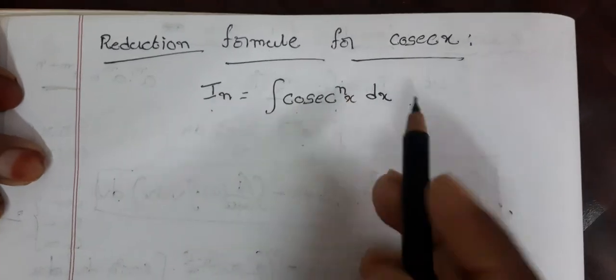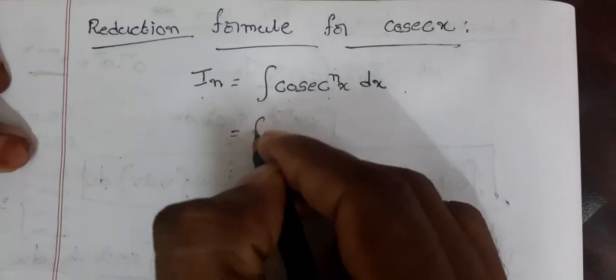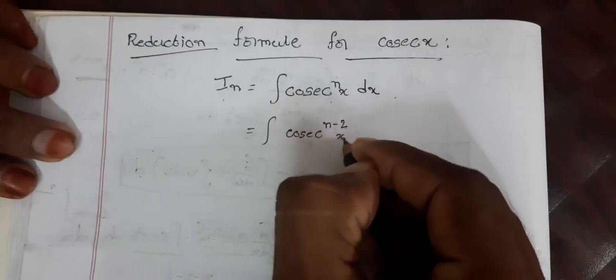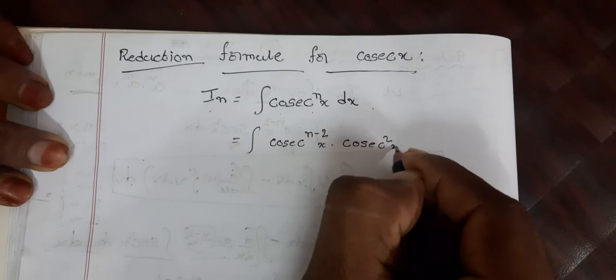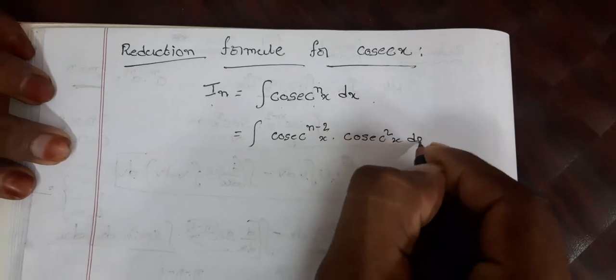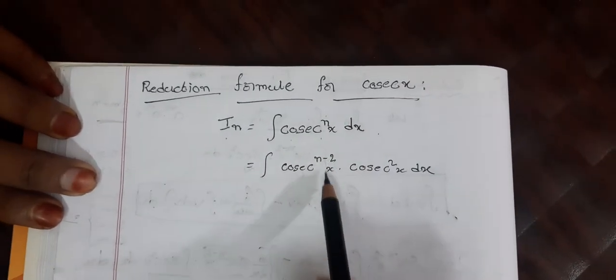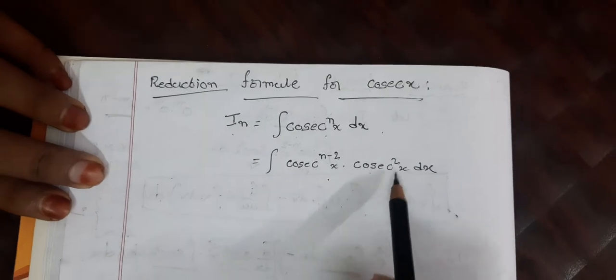I_n is equal to the integral of cosecant^n(x) dx. We split this as the integral of cosecant^(n-2)(x) into cosecant²(x) dx — we can separate it as cosecant^(n-2)(x) into cosecant²(x).